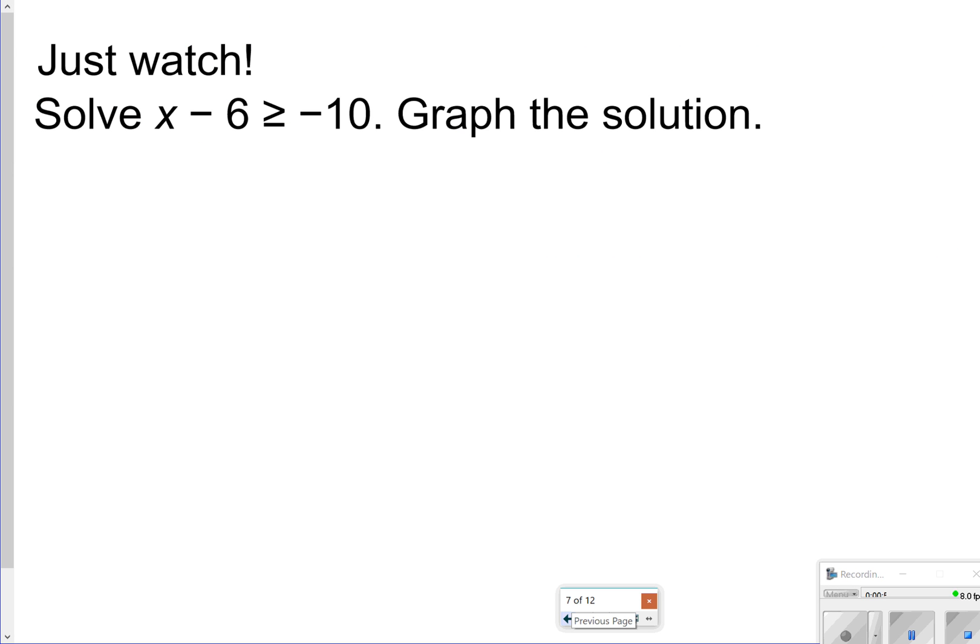So here's an example of how you would solve an addition inequality. I see minus 6, so I'm going to add 6 to both sides to get x by itself. So I'll have x is greater than or equal to negative 4, and just remember when I graph the solution, I have my three numbers I'm focusing on. This is greater than or equal to, so that's a closed circle pointing to the right.